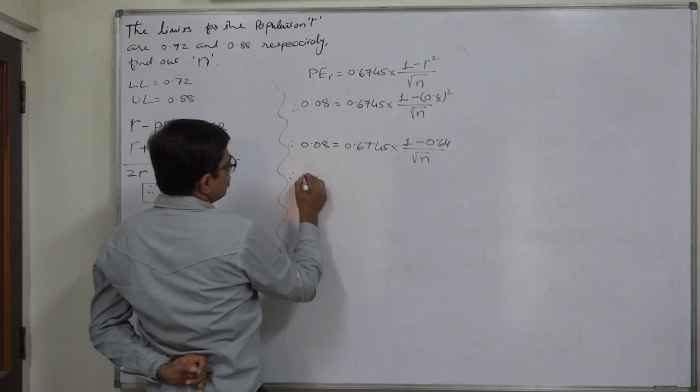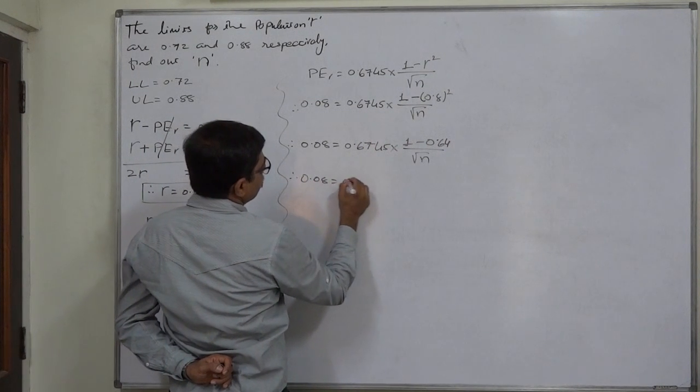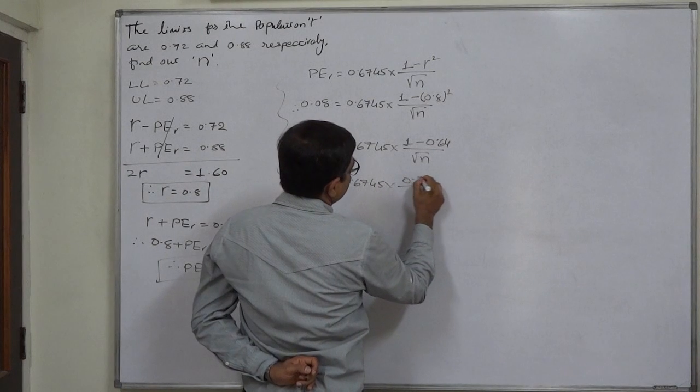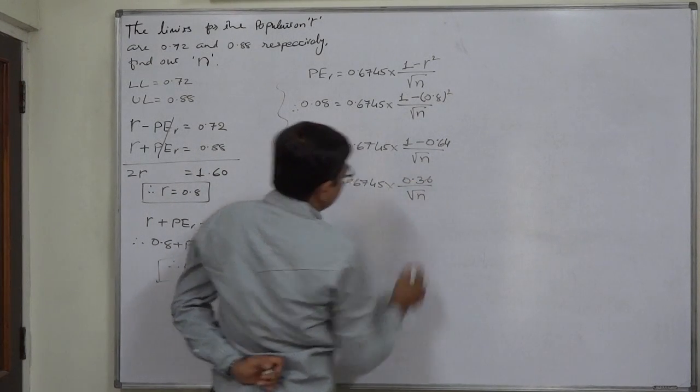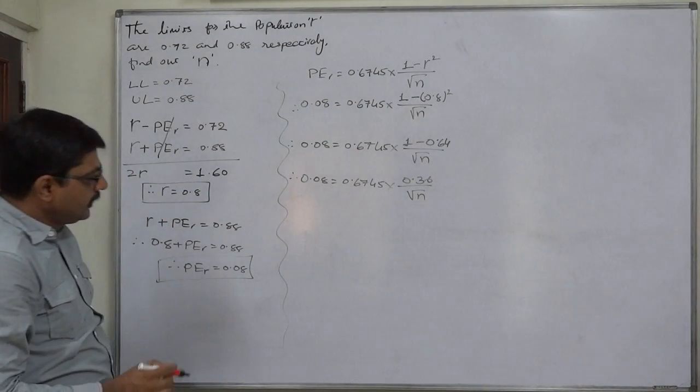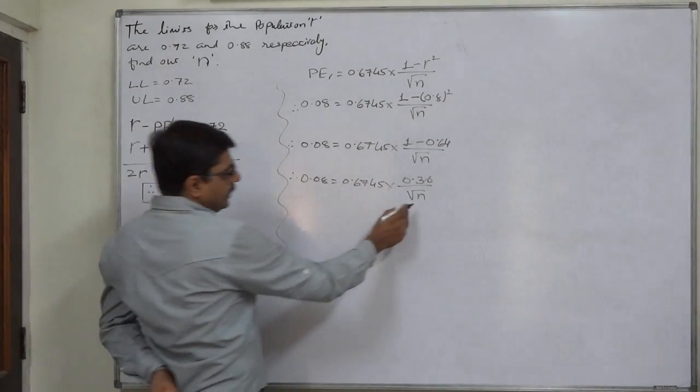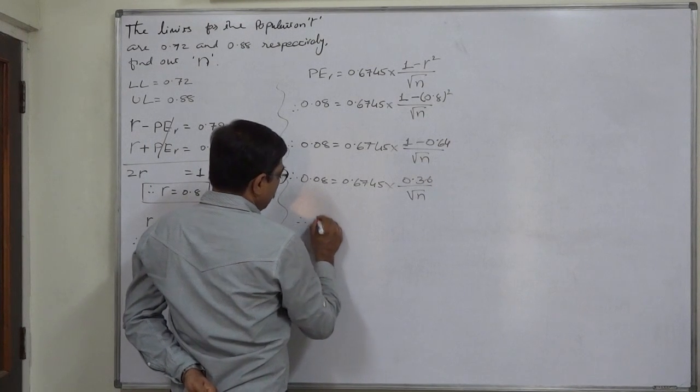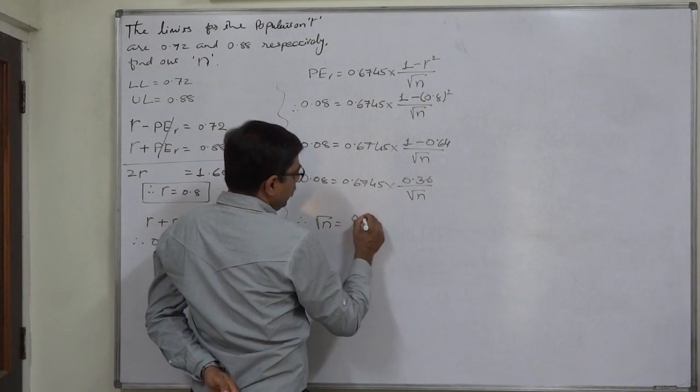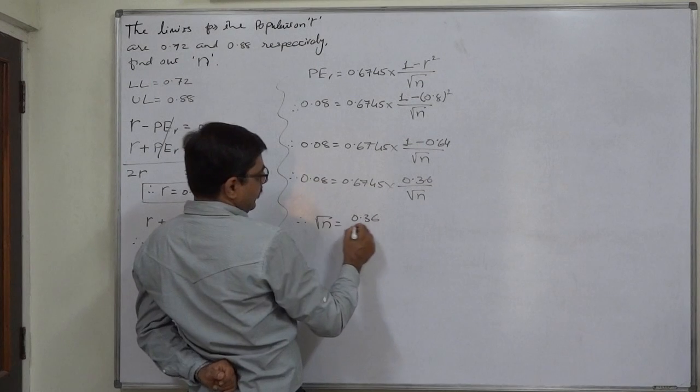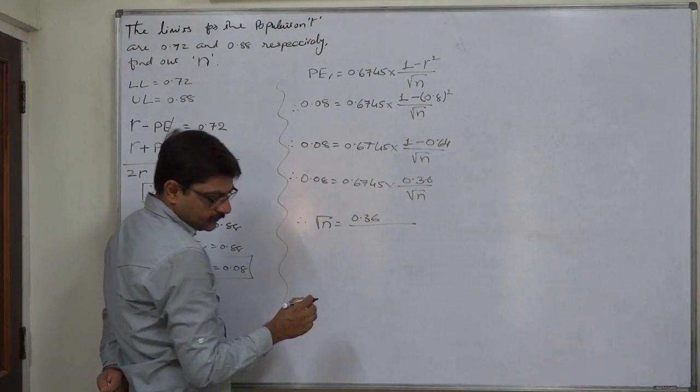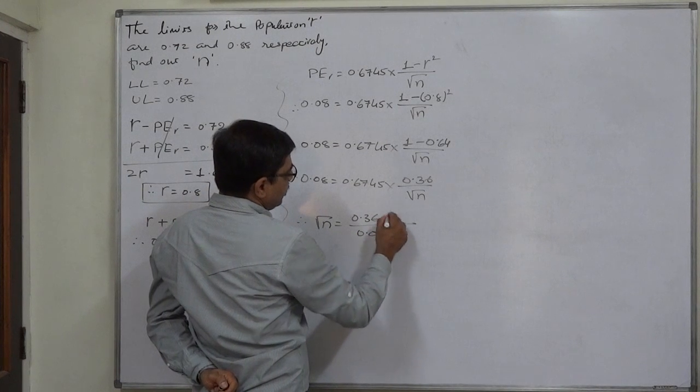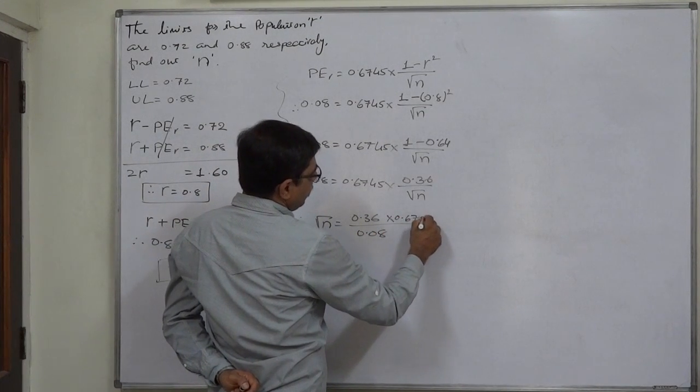Another simplification is 0.08 equals to 0.6745 into 0.36 upon under root N. Now we want the value of N, so ultimately under root N is 0.36 upon 0.08 and 0.6745 remains as in multiplication.